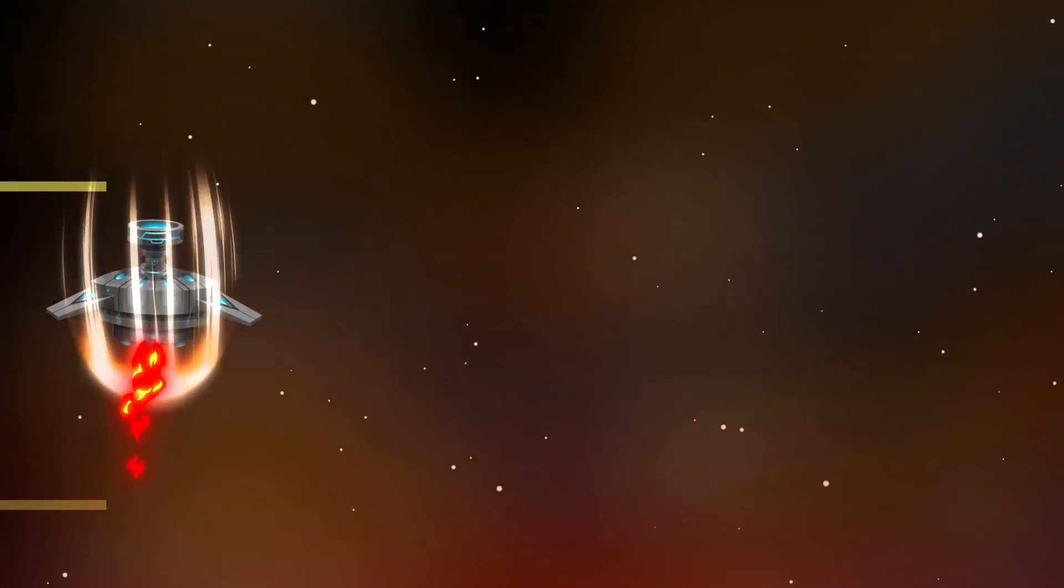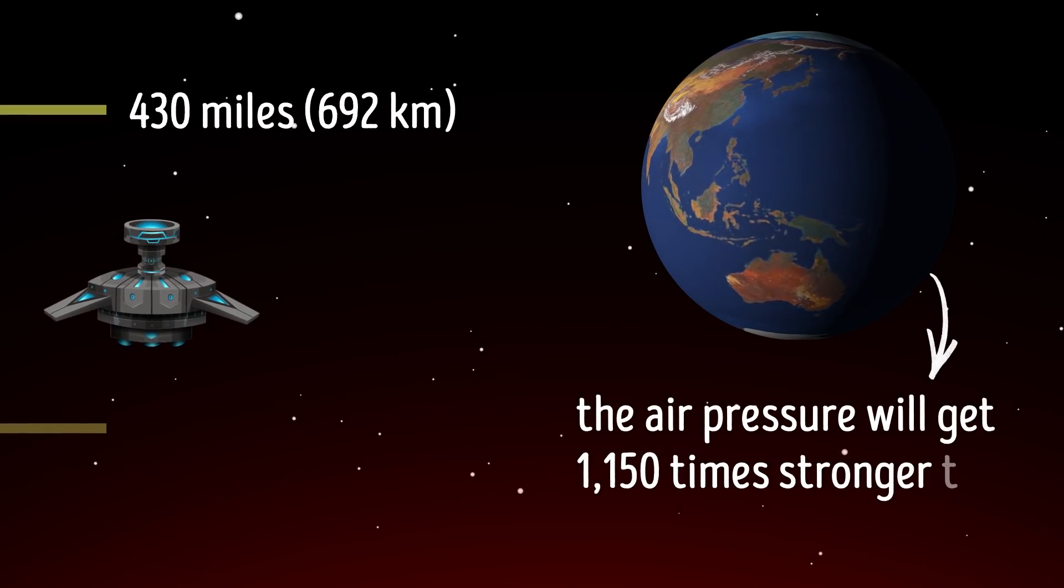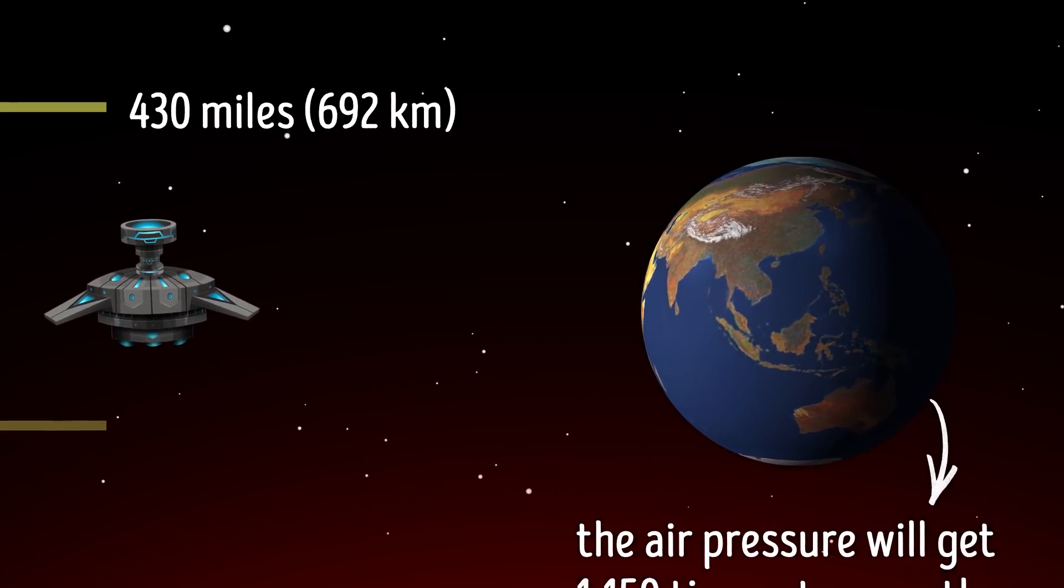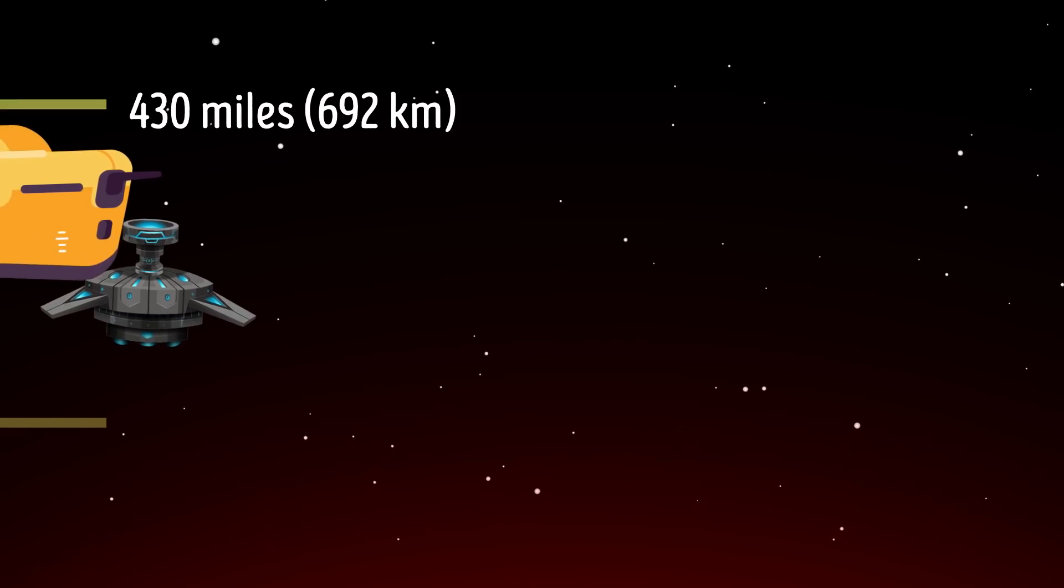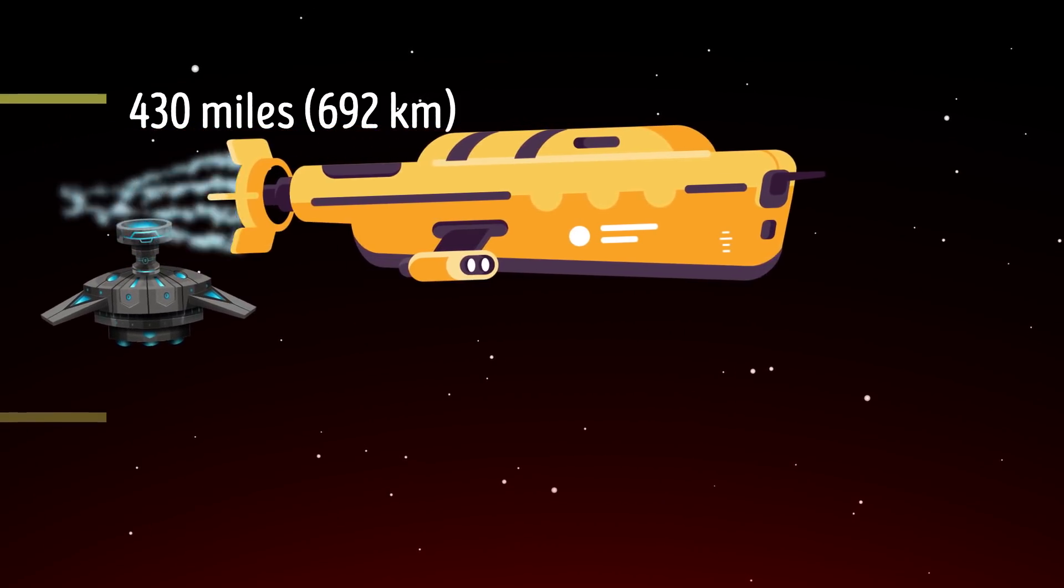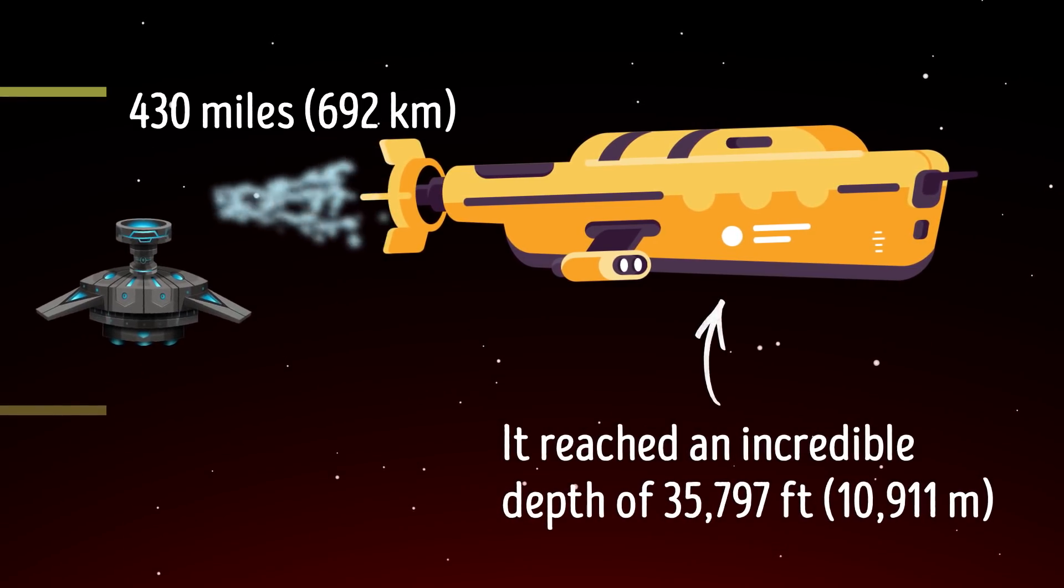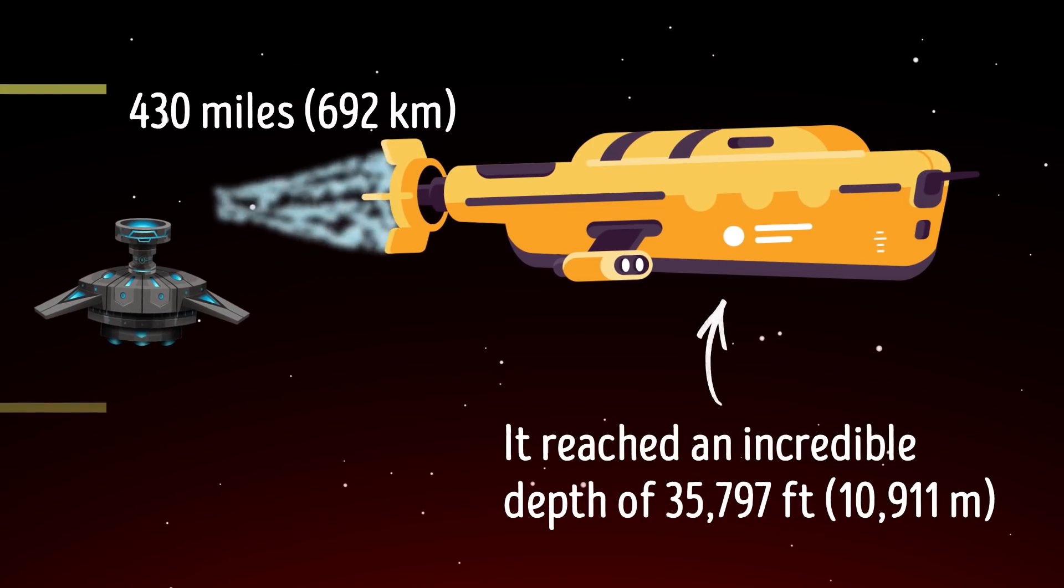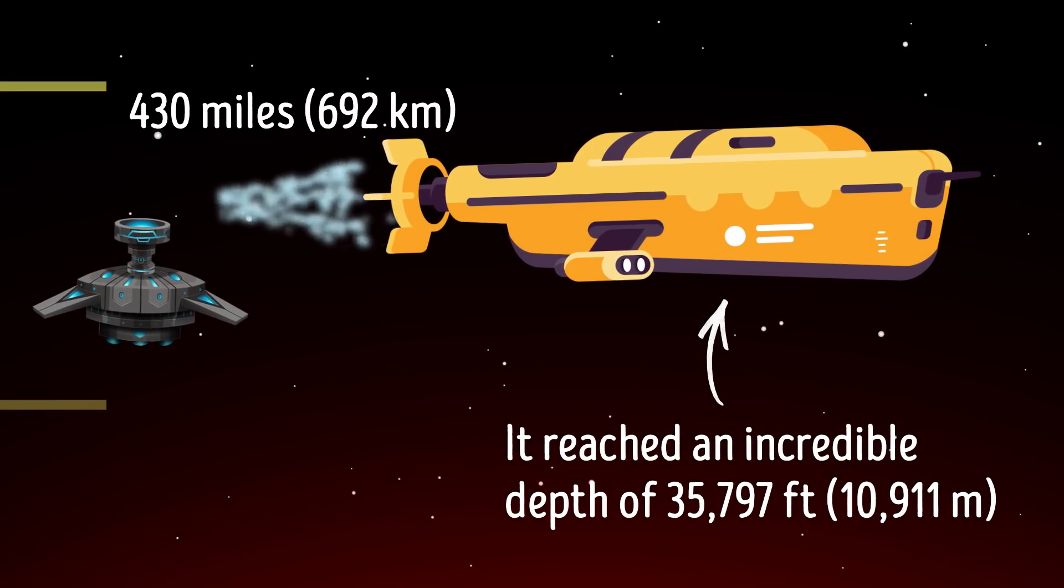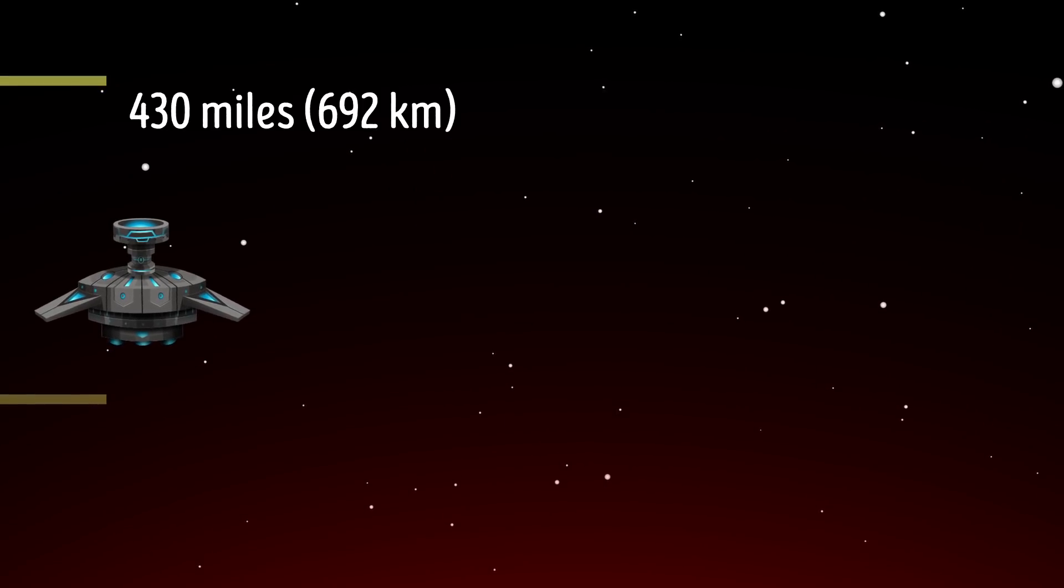As soon as you descend 430 miles lower, the air pressure will get 1,150 times stronger than it is on Earth. There's only been one man-made craft that could withstand such pressure, and it was the Trieste Bathyscaphe. It reached an incredible depth of 35,797 feet while descending to the deepest point of the Earth's ocean, the Challenger Deep in the Mariana Trench. That's why, if you go deeper than the Galileo probe managed to reach, you'll uncover Jupiter's greatest mysteries.